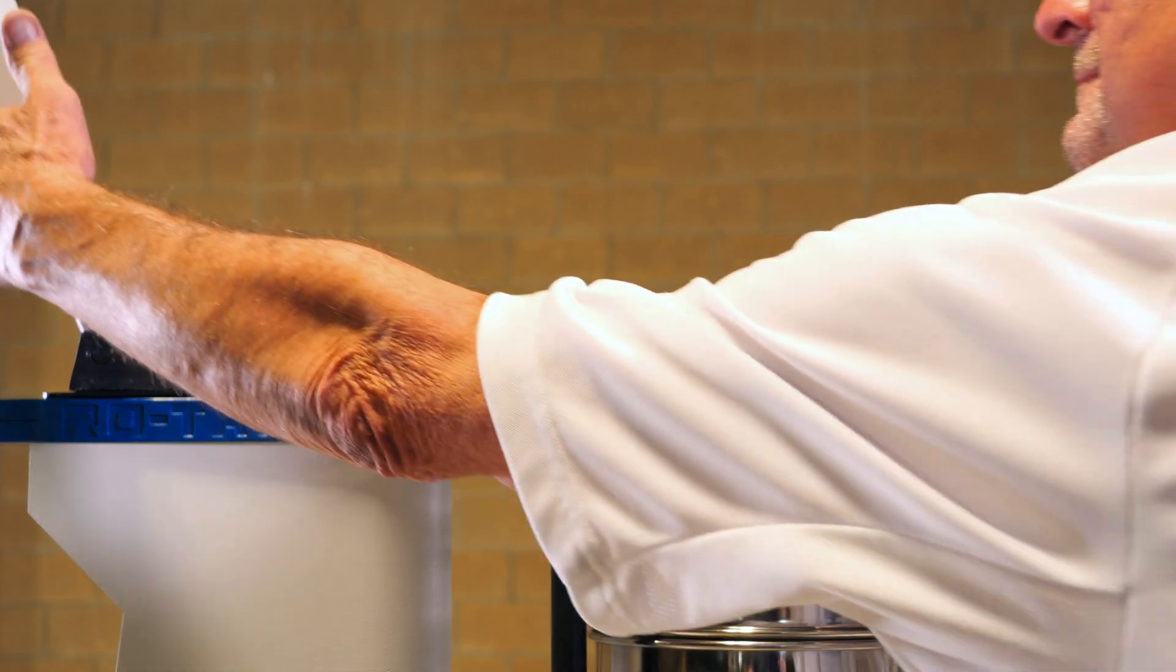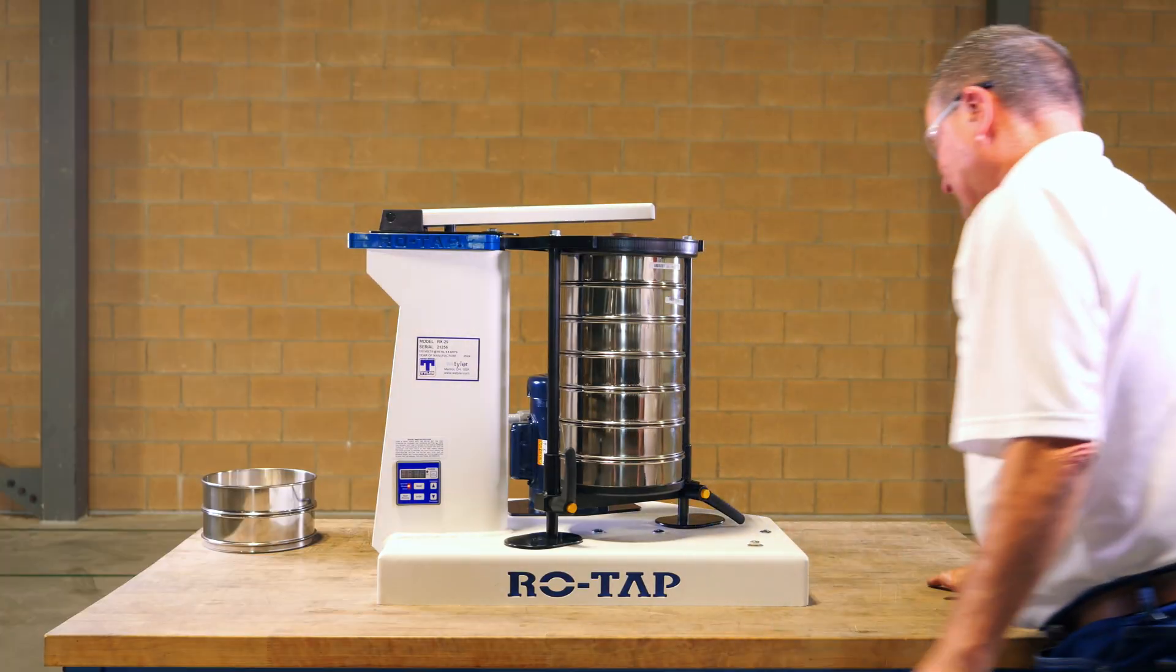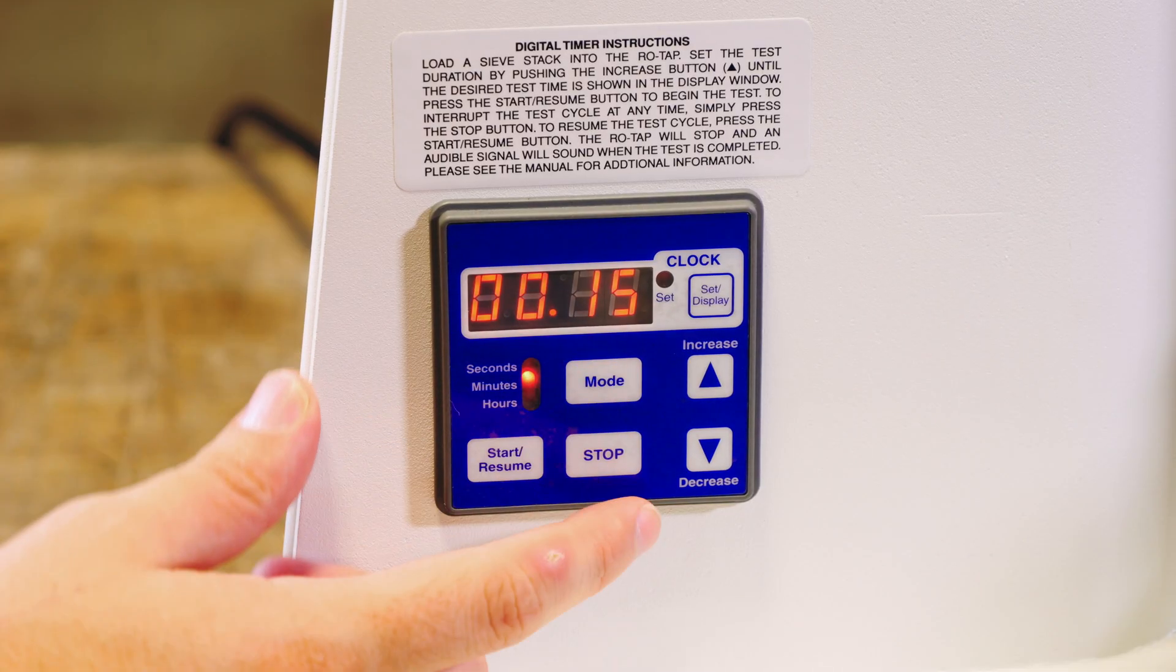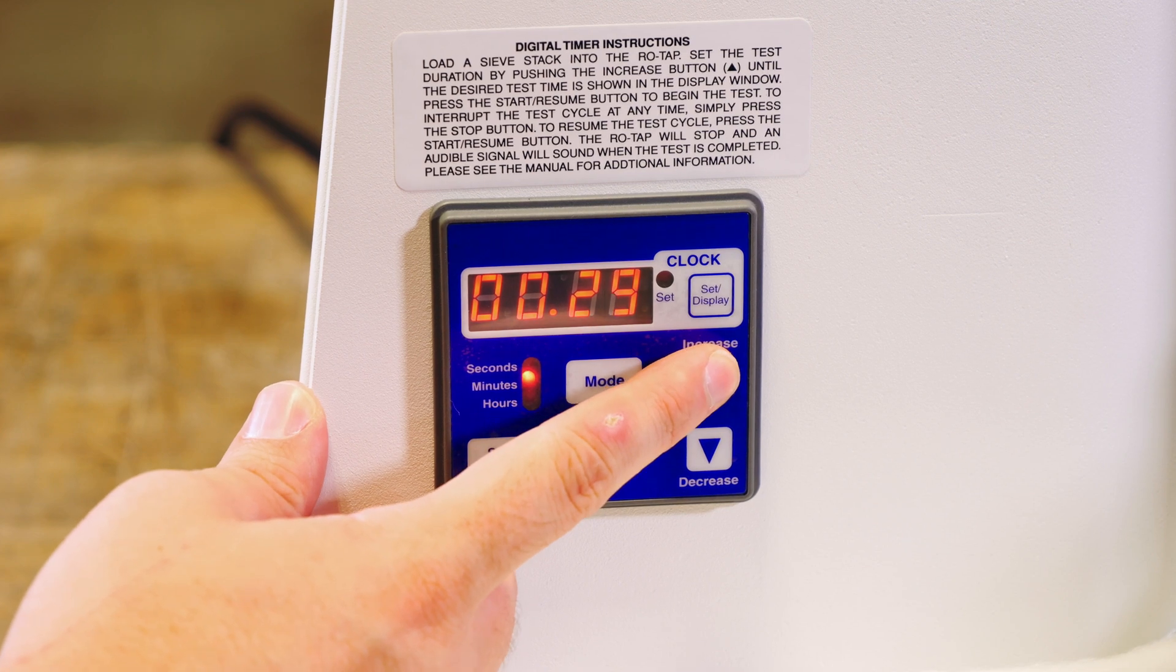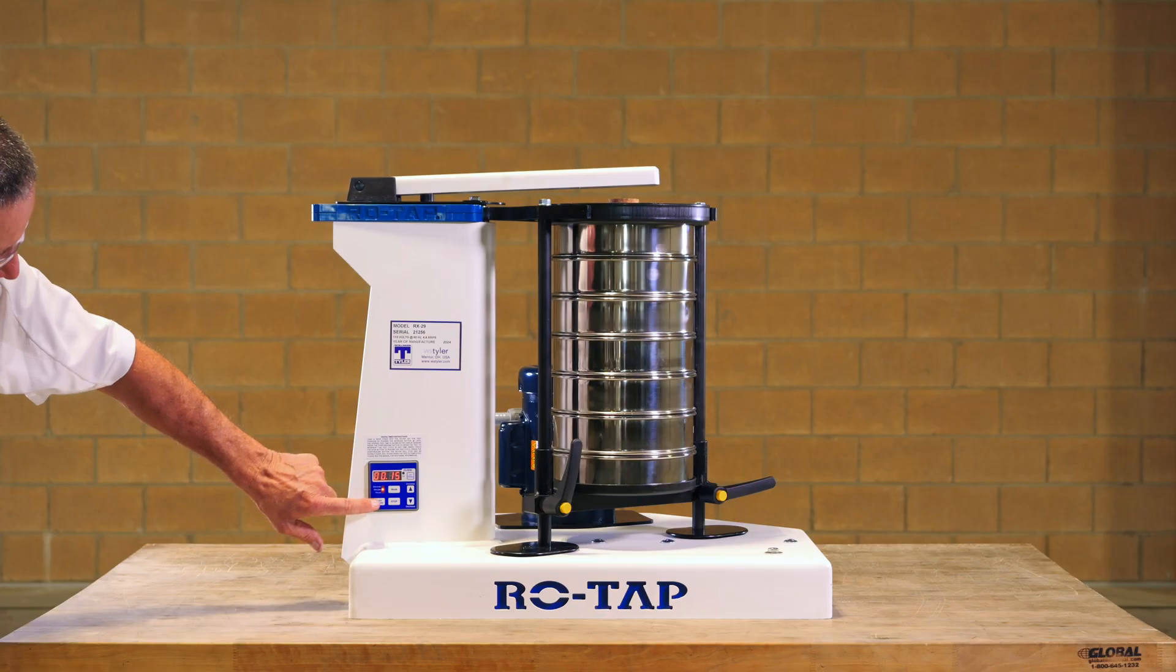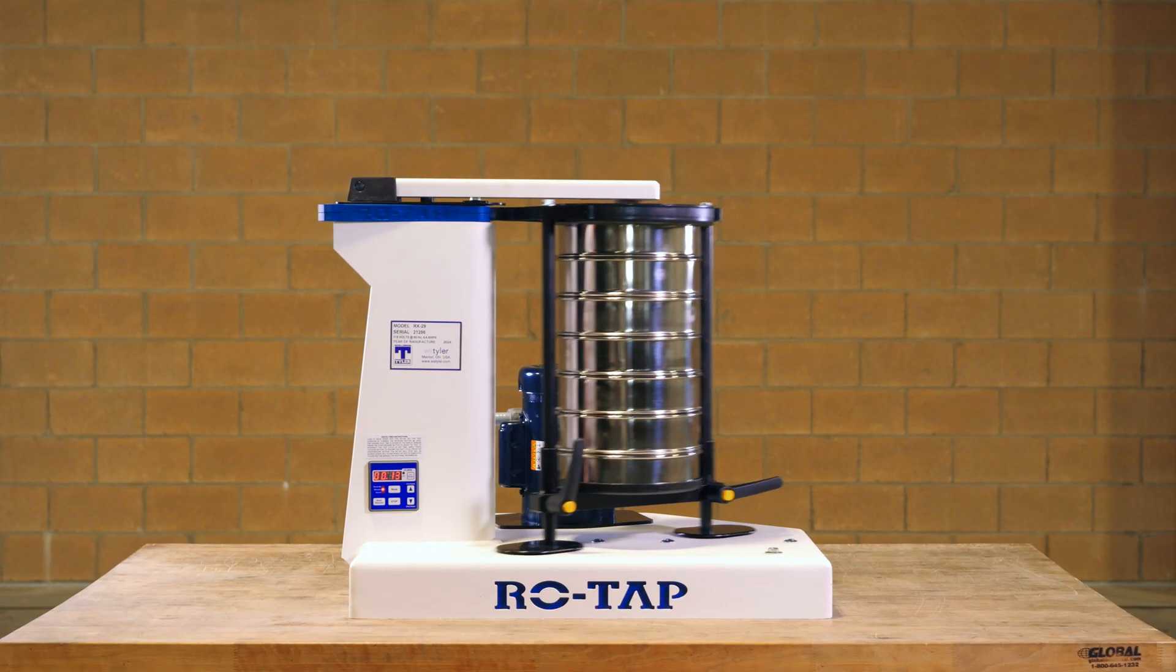all that's left to do is lower the hammer and set your runtime. You can hit mode to show the numbers if they're not on display, and from there just hit the up arrow to set the runtime with options starting at one second and going all the way to 99 minutes and 59 seconds. And finally, press start.